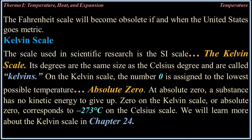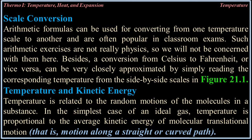Kelvin scale: The scale used in scientific research is the SI scale, the Kelvin scale. Its degrees are the same size as the Celsius degree and are called kelvins. On the Kelvin scale, the number 0 is assigned to the lowest possible temperature — absolute zero. At absolute zero, a substance has no kinetic energy to give up. Zero on the Kelvin scale, or absolute zero, corresponds to negative 273 degrees Celsius. Scale conversion: Arithmetic formulas can be used for converting from one temperature scale to another. Such arithmetic exercises are not really physics, so we will not be concerned with them here. A conversion from Celsius to Fahrenheit, or vice versa, can be closely approximated by reading the corresponding temperature from side-by-side scales.